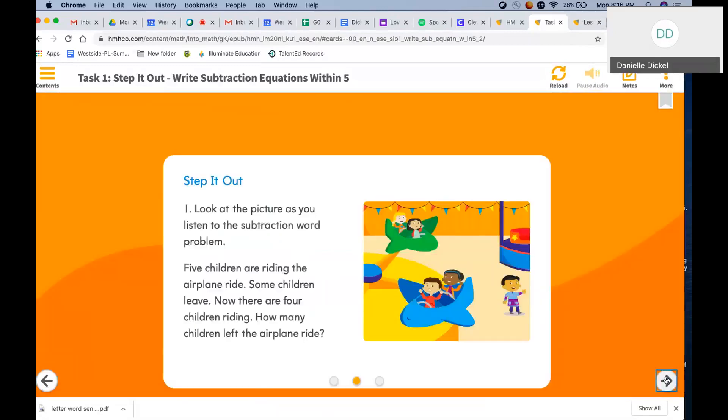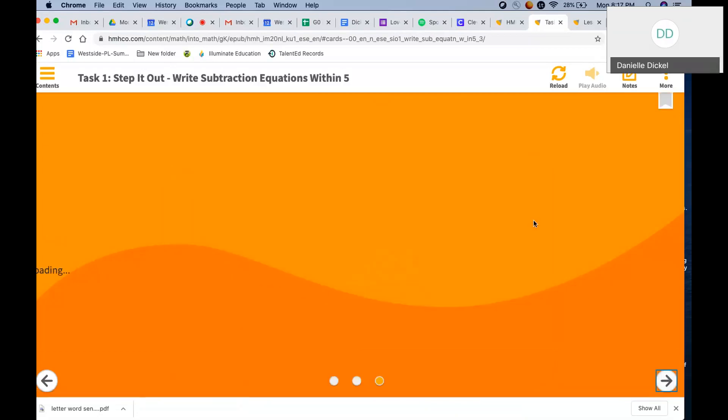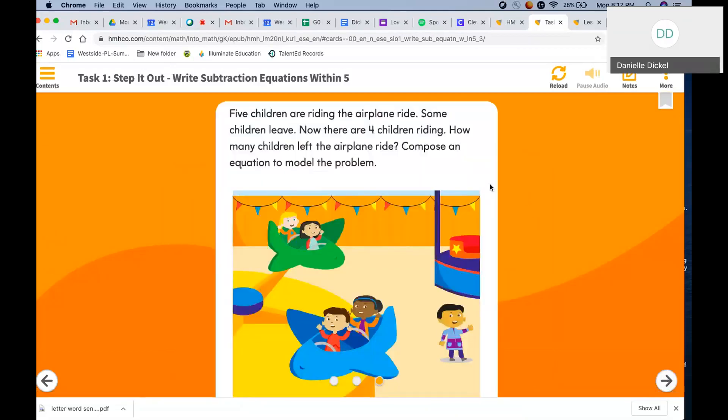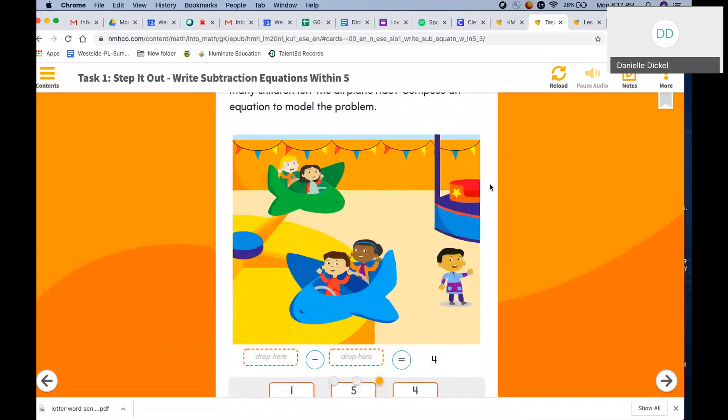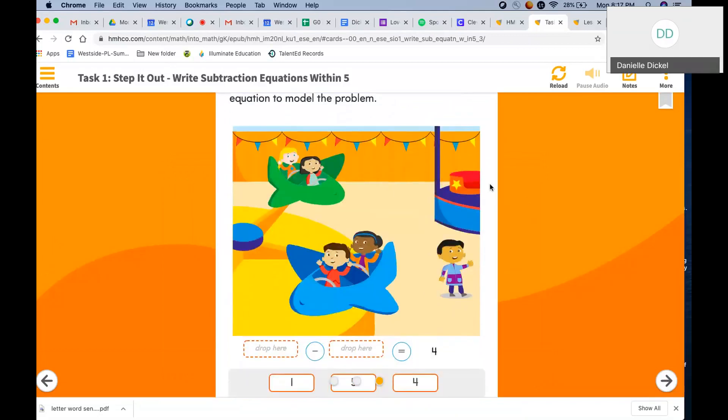Look at the picture as you listen to the subtraction word problem. Five children are riding the airplane ride. Some children leave. Now there are four children riding. How many children left the airplane ride? We are going to make our equation about how many children left the airplane ride. How many children did we start with on our airplane ride?